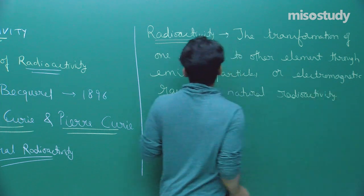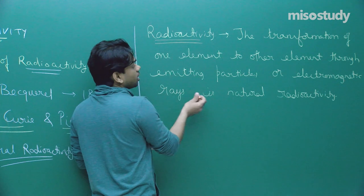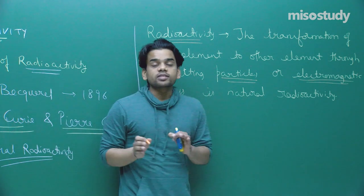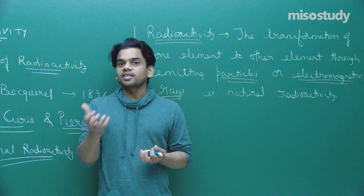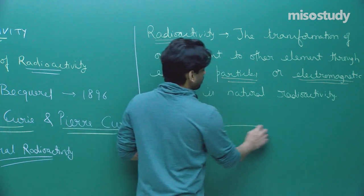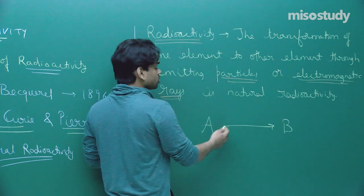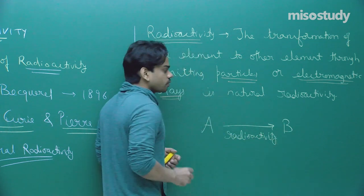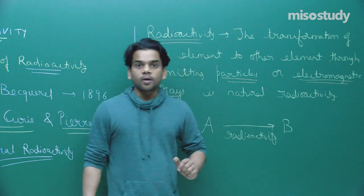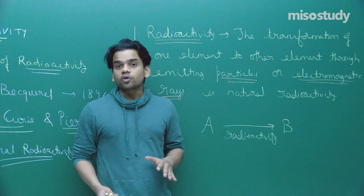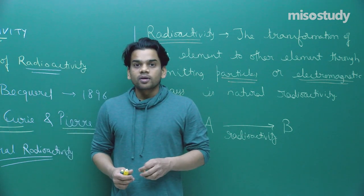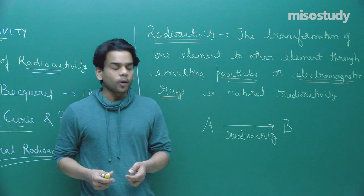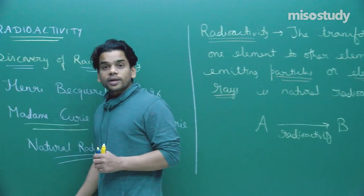To understand this definition: when one substance disintegrates and forms another substance — for example if A gets converted to B — this conversion is known as radioactive transformation or natural radioactivity. It can take place through particle emission or through electromagnetic wave emission. These things can only be found out with proper experiments.